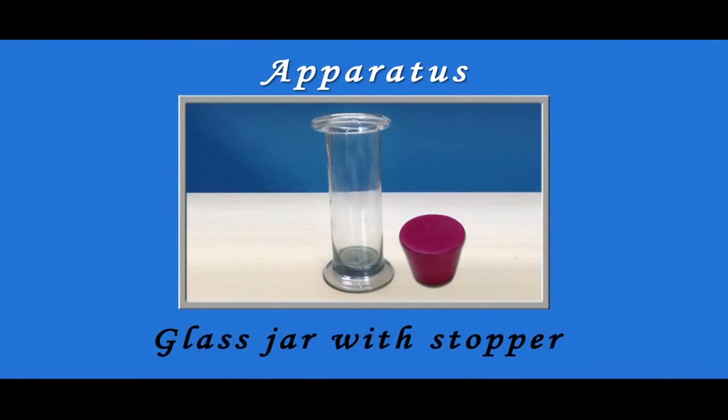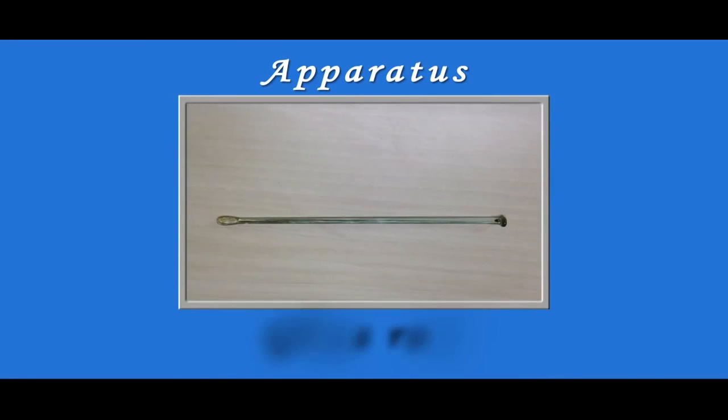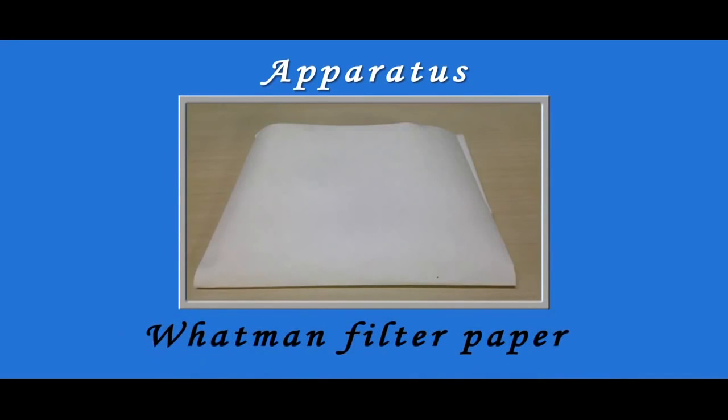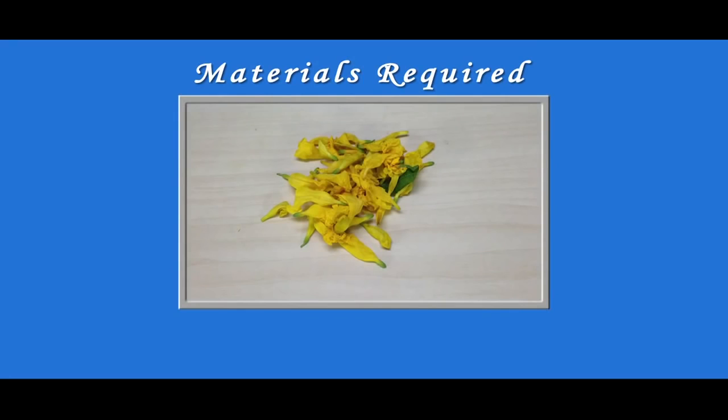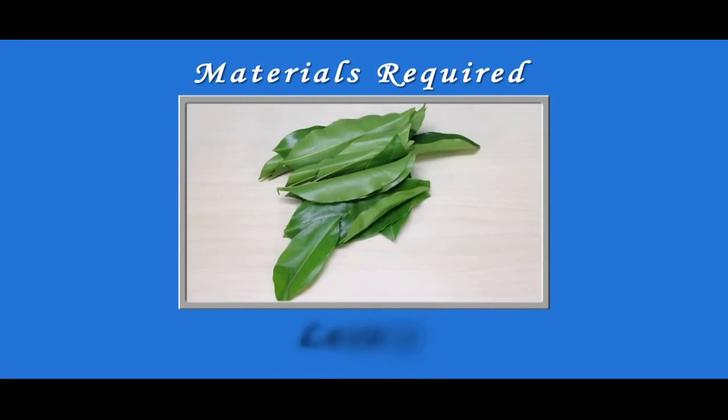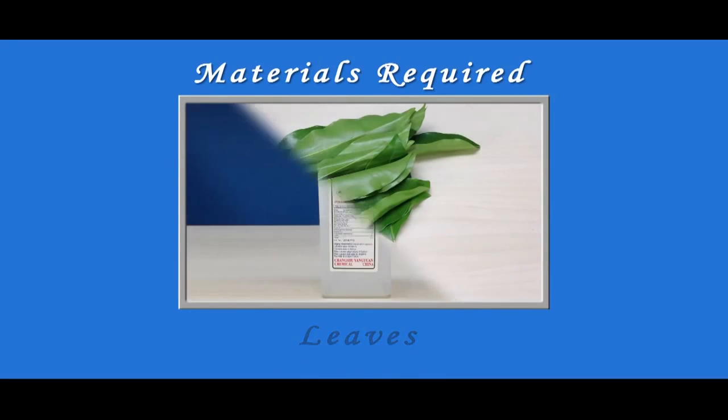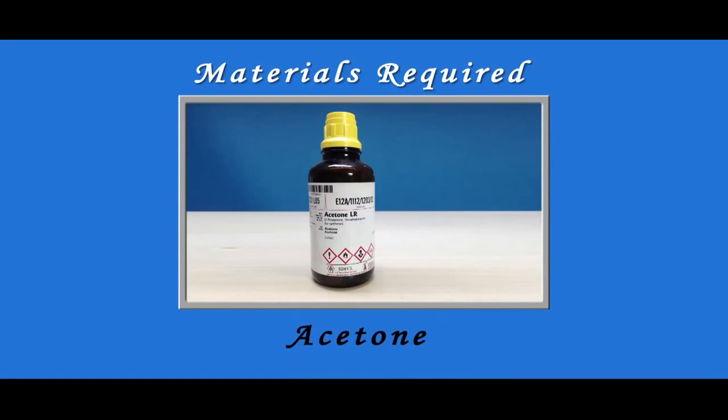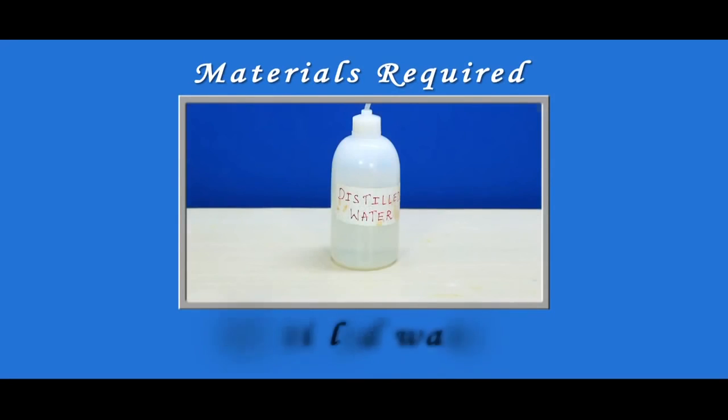Apparatus required to perform this experiment are glass jar with stopper, glass rod, pistil and mortar, Whatman filter paper, and fine capillary tube. Materials required are flowers, leaves, alcohol, acetone, and distilled water.